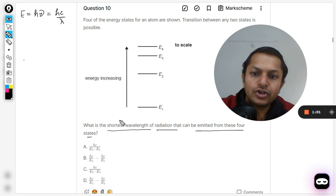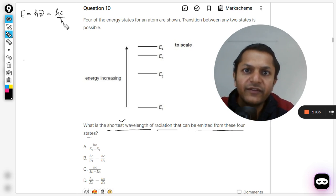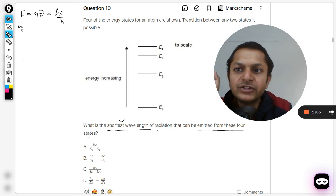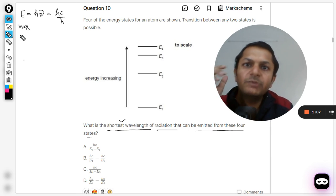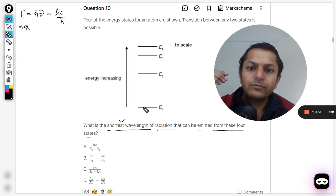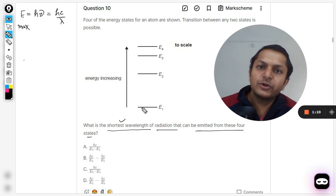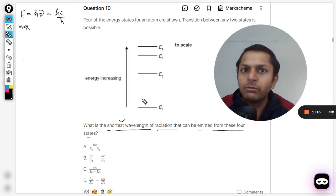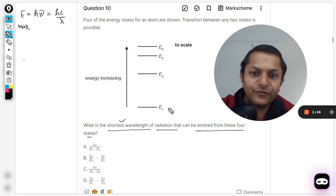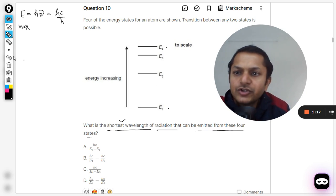Now they're talking about the shortest wavelength, so shortest wavelength means the maximum amount of energy possible. Maximum energy obviously means the biggest transition has to take place. That is from E1 to E4 clearly, so the change in energy should be E4 minus E1.